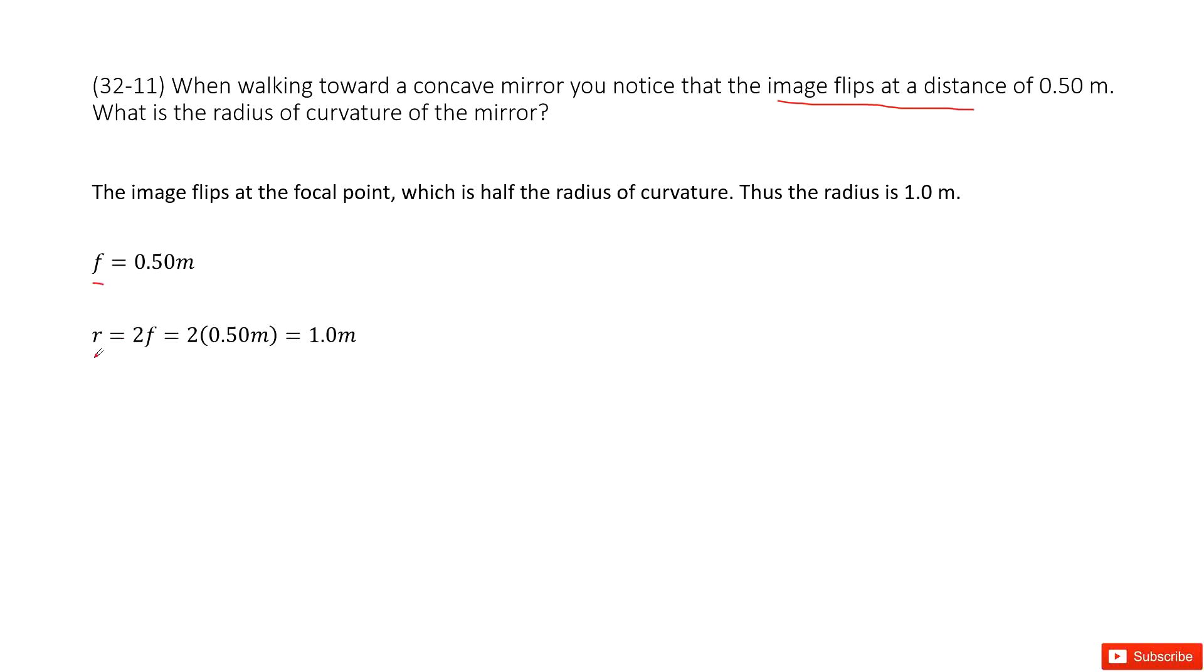So we can say the radius equals 2 times the focal length f, so 2 times 0.5 meters, it should be 1 meter. Thank you.